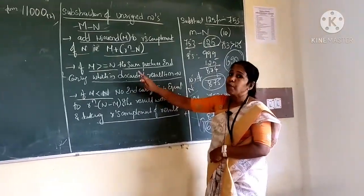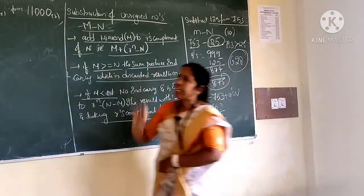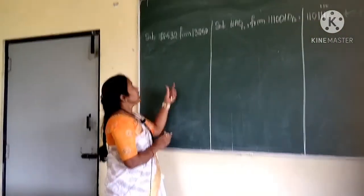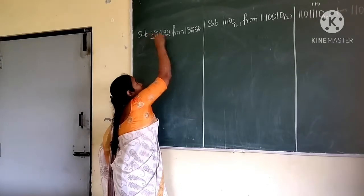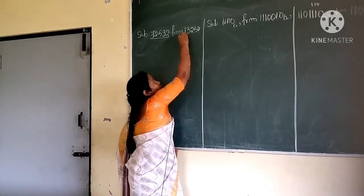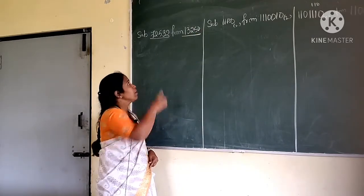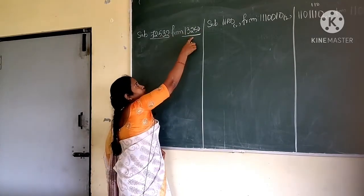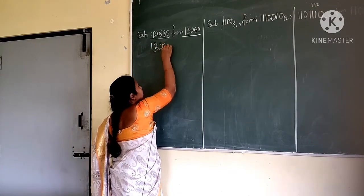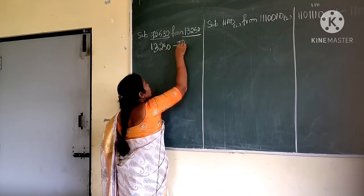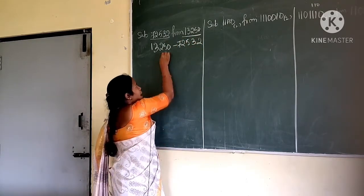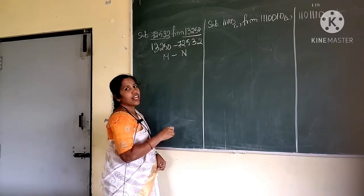First case I have done where m is greater than or equal to n. Second case: when m is less than n. Here I should subtract 72532 from 13250 — that is 13250 minus 72532, which is m minus n.